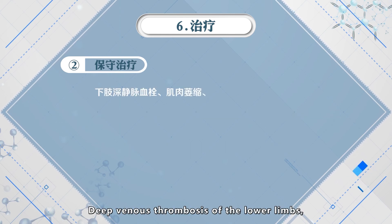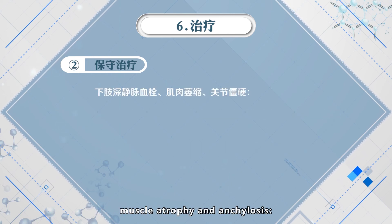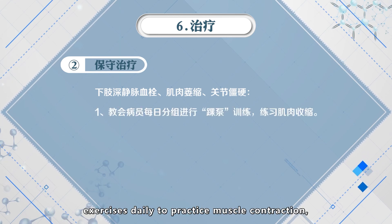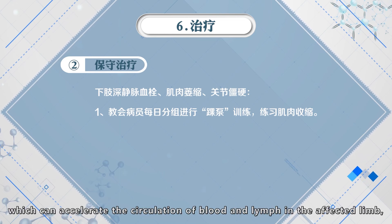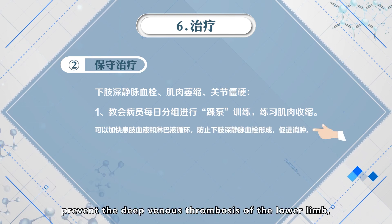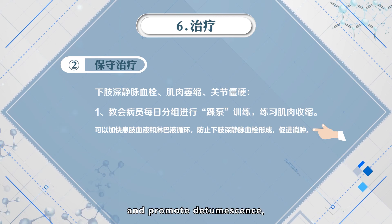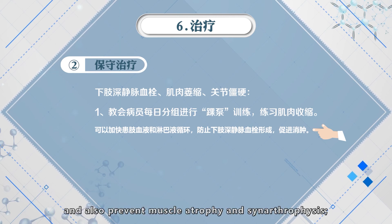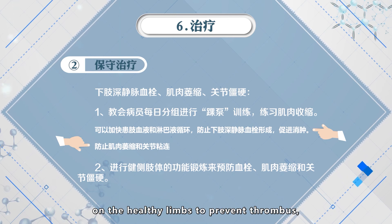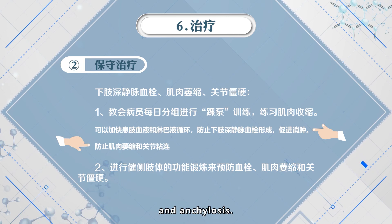For deep venous thrombosis, muscle atrophy, and ankylosis prevention: teach patients to perform ankle pump exercises daily to practice muscle contraction. This can accelerate the circulation of blood and lymph in the affected limb, prevent deep venous thrombosis, promote recovery, and prevent muscle atrophy and ankylosis. Functional exercises on the healthy limbs are also needed to prevent thrombosis, muscle atrophy, and ankylosis.